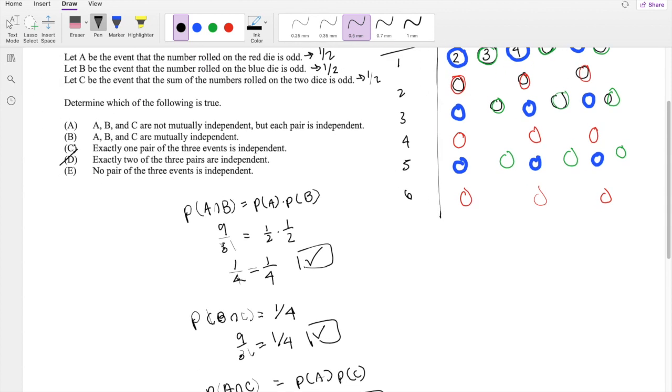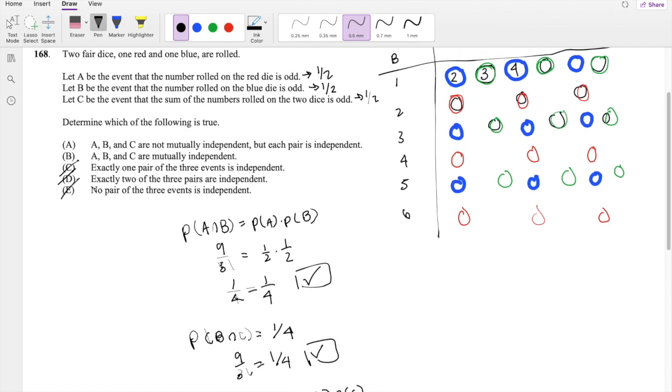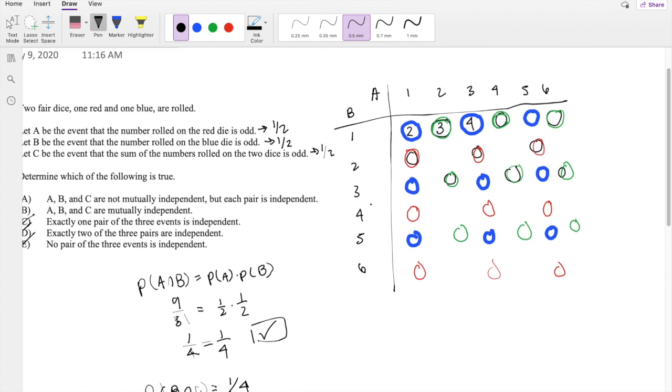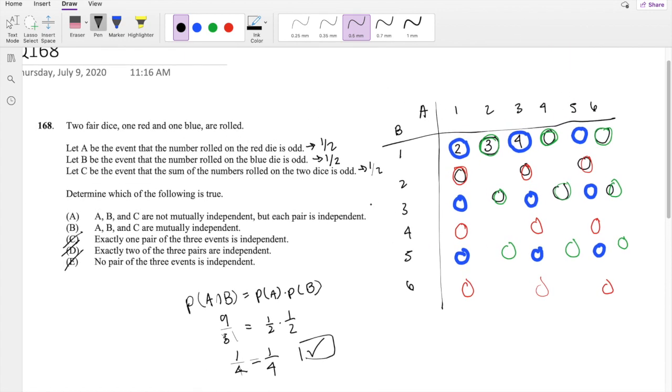That's not it. Exactly one of the pairs is independent? No, that's not it either. None of the pairs is independent? That's not true. So now we're trying to see: are A, B, C mutually independent? Mutually independent means can all three events happen at the same time?